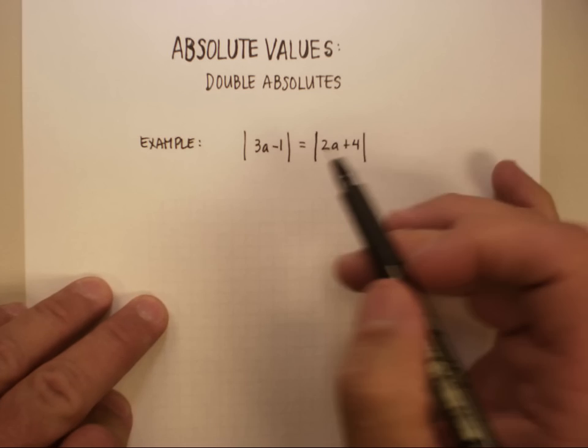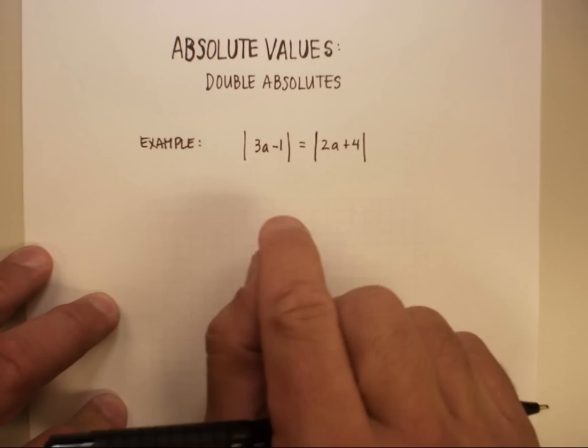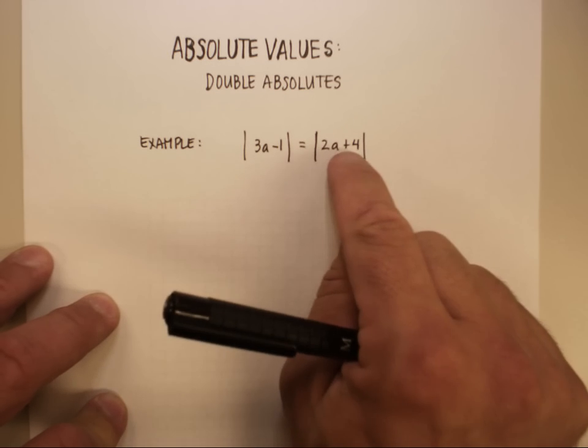Okay, so let's get right into this one. So reading this in English, it says the absolute value of 3a minus 1 is equal to the absolute value of 2a plus 4.